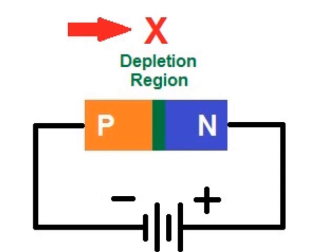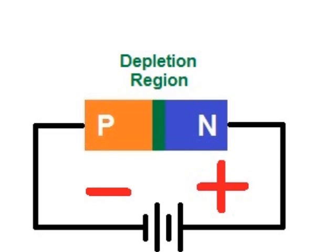One other interesting thing about the reverse bias diode, if we increase the voltage of the battery, the neutrally charged depletion region grows wider.